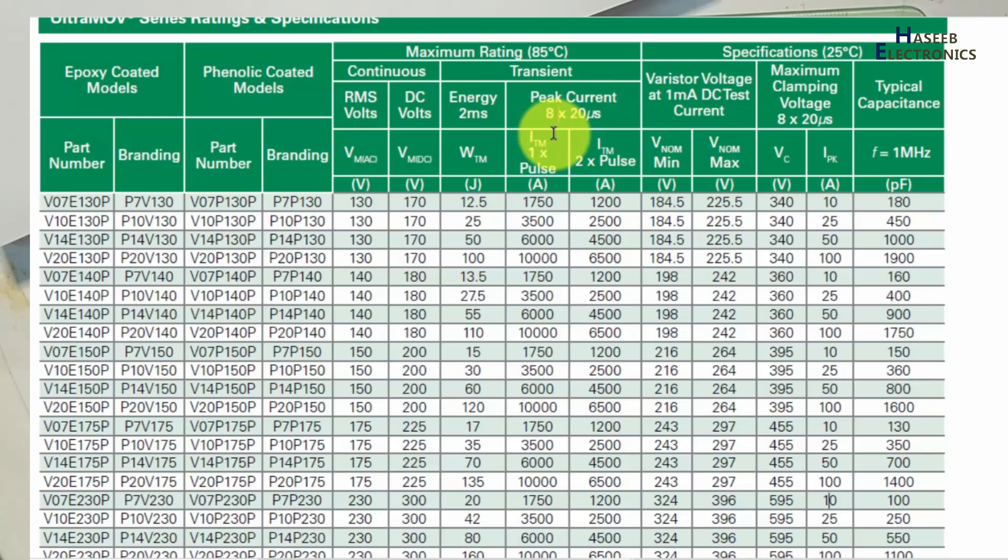If one pulse with this time duration - 8 microseconds for rising up to 90 percent, to 50 percent in the decay - at that time it will allow current 1750 amperes. This one, and if we are discussing this one, it will allow 3500 ampere current. If two pulses, that is 2500. Most of the time it is calculated by multiple pulses.